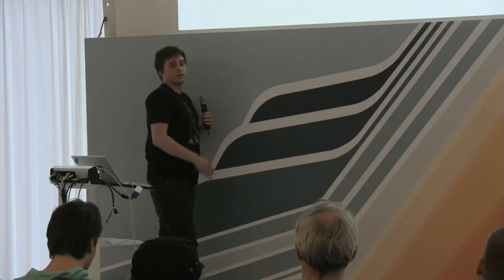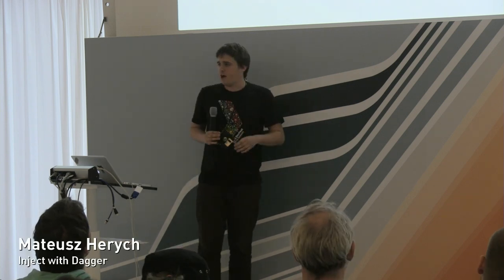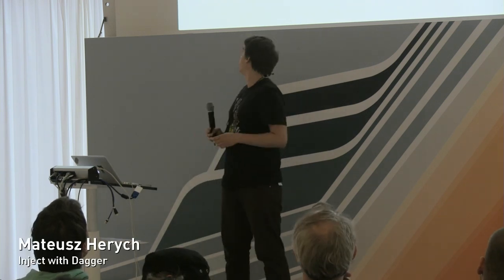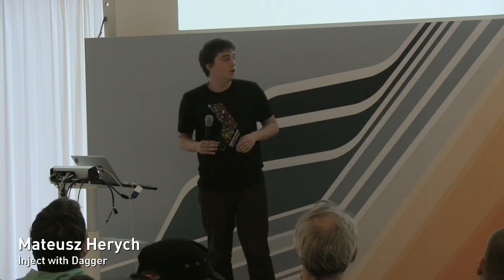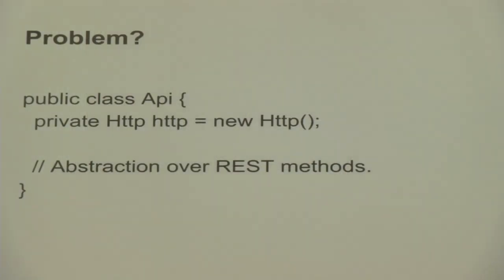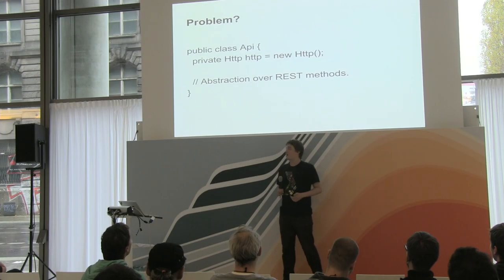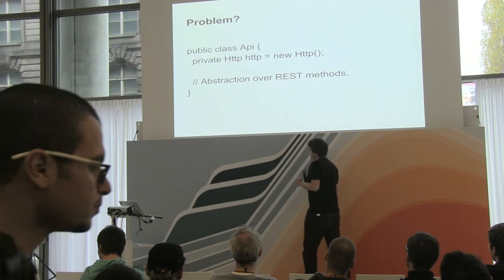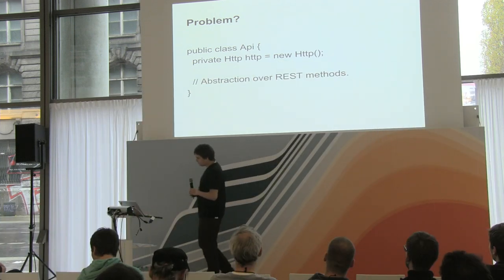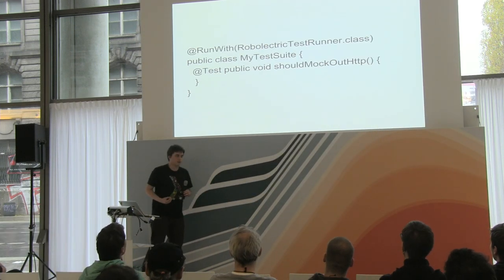Let's say we have a component called API, and this component is some kind of abstraction over RESTful methods. In this simple piece of code, do you see any problems? What is the problem here? To see the problem we need to think about testing.